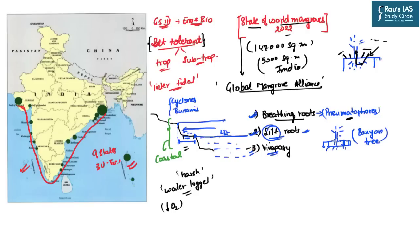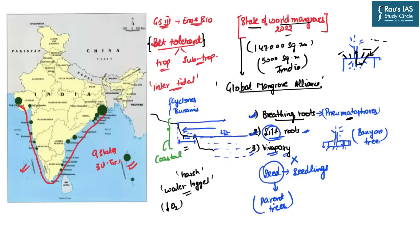The third adaptation is viviparous nature. Saline, unconsolidated soils with little or no oxygen are not conducive for seed germination. To overcome this, mangrove species have a unique reproduction method called vivipary — seeds germinate and develop into seedlings while still attached to the parent tree. These seedlings, called propagules, photosynthesize while attached, with the parent tree supplying water and nutrients. They are buoyant and float before rooting themselves in suitable soil.